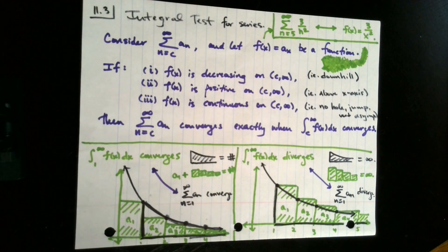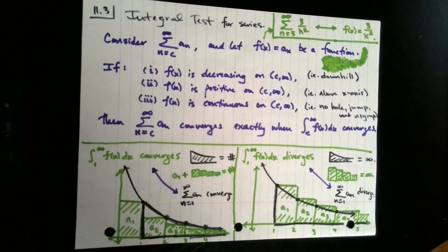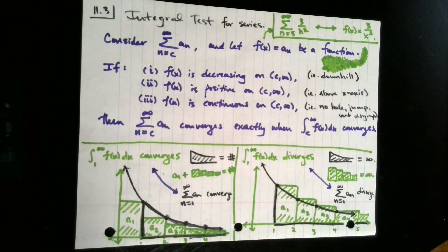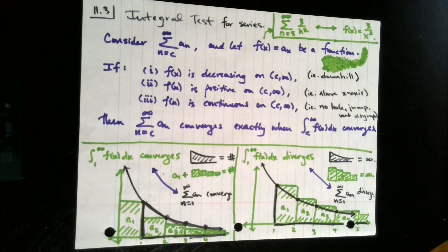So when you have a function which is decreasing, positive, and continuous, built from the terms of your series, the integral associated with your function converges precisely when your series converges, and diverges precisely when your series diverges. There is a direct correspondence between the integral's convergence or divergence and the corresponding series' convergence or divergence. And that is what we call the integral test.